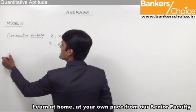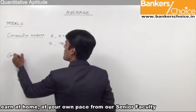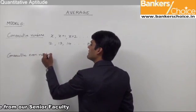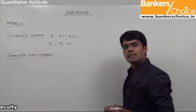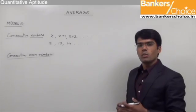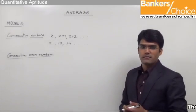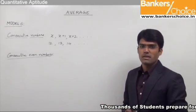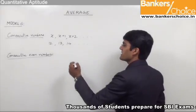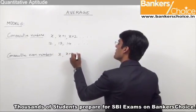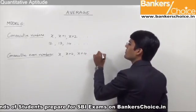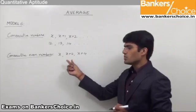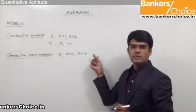Similarly we have something called consecutive even numbers. Consecutive even numbers are nothing but the numbers which are even and come one after the other in succession. For example 2, 4, 6, 8 and so on are consecutive even numbers and these numbers can be represented as x, x plus 2, x plus 4 and so on. That is if the first even number is x then the next one will be x plus 2, the third one will be x plus 4 and so on.